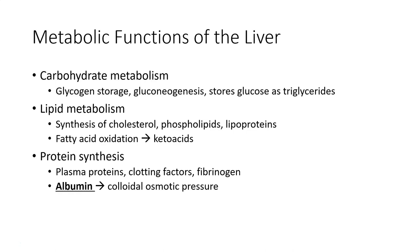The liver is an important site for protein synthesis and degradation. It releases secretory proteins into the circulation and produces proteins for its own cellular needs too. The most important of these secretory proteins is albumin, which contributes significantly to plasma colloidal osmotic pressure and to the binding and transport of numerous substances, including some hormones, fatty acids, bilirubin, and other anions. The liver also produces other important proteins such as fibrinogen and the clotting factors in the blood.